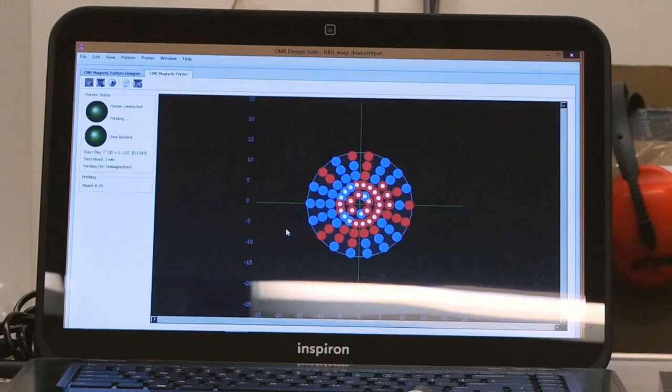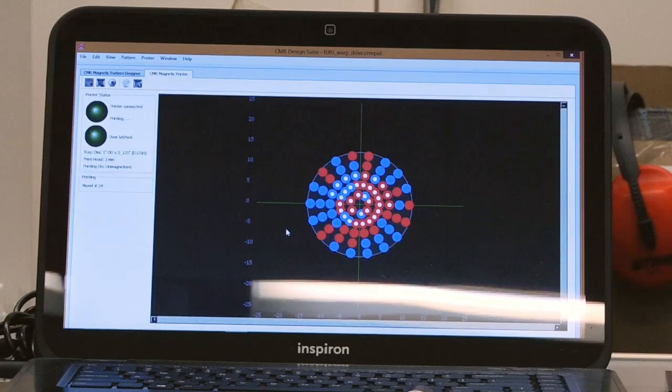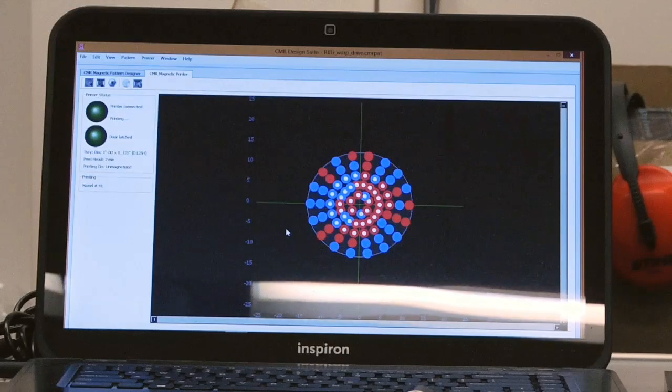It turns out that the order you print in is useful, so you have total control over that. You have control over polarity, location, the amount of saturation, and so forth. It becomes very easy to print a very complex magnetic device just by driving the software.